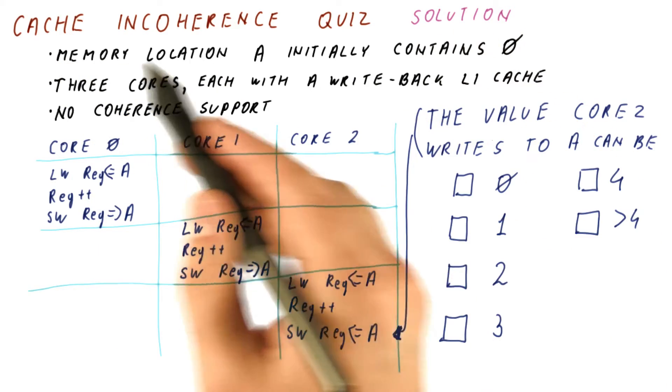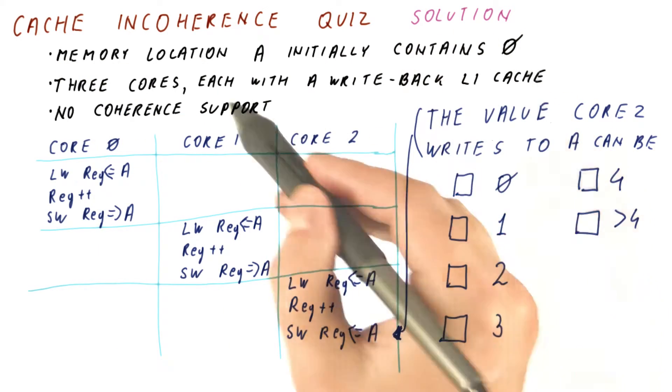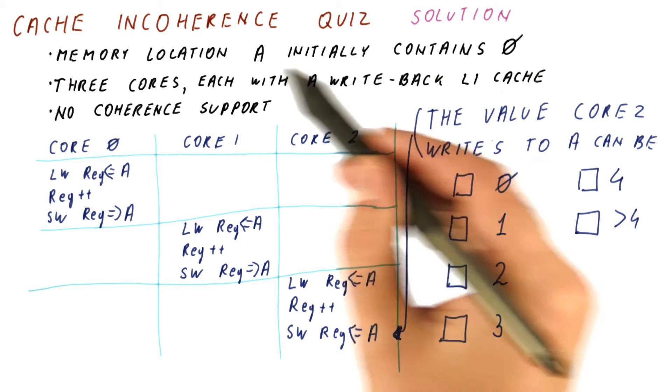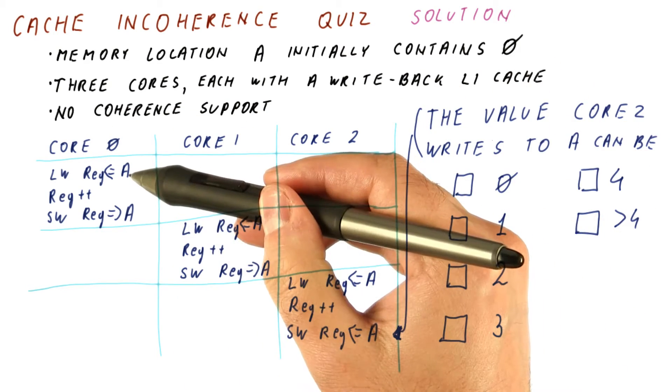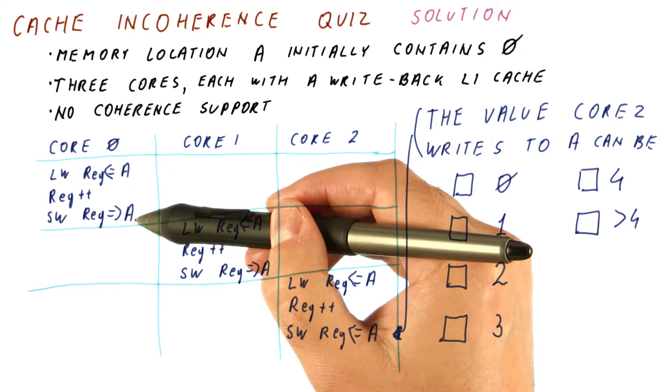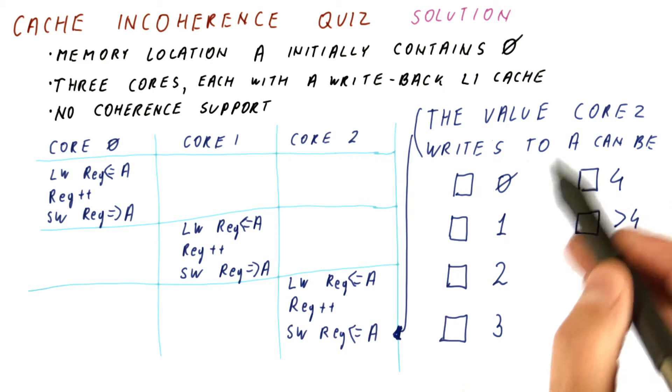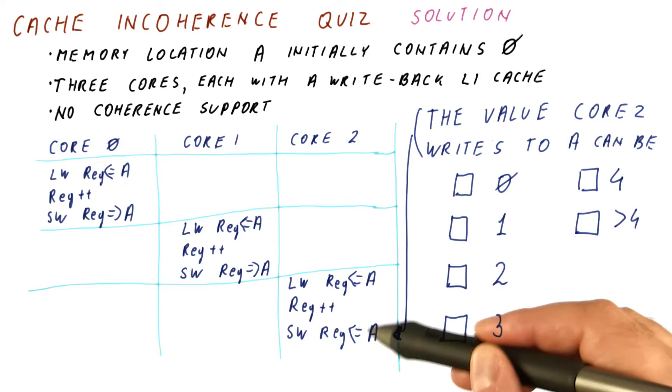Let's look at the solution to our cache incoherence quiz. We had three caches and three cores, a location that starts at 0, and then each core reads, increments, and then writes to that memory location. So the question is, what's the final value we write here?